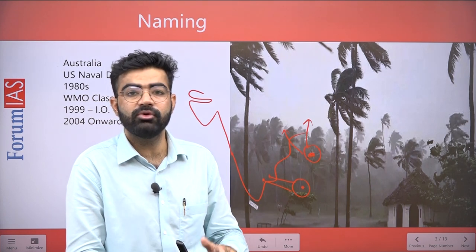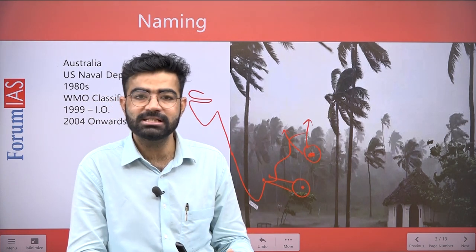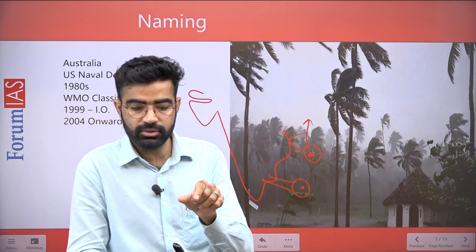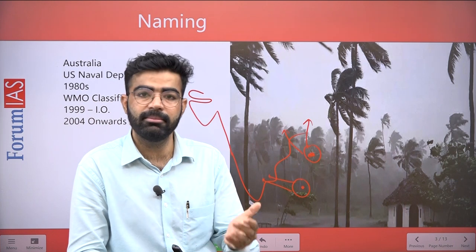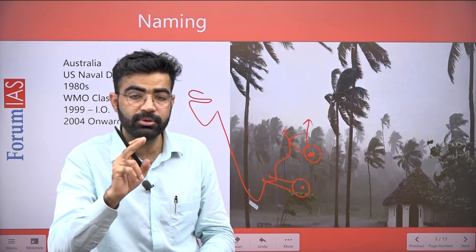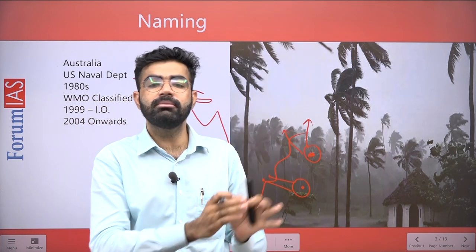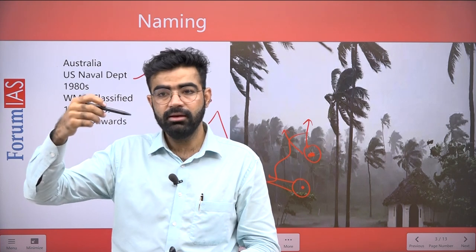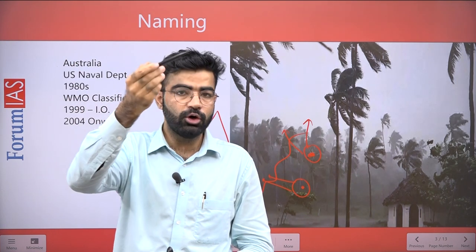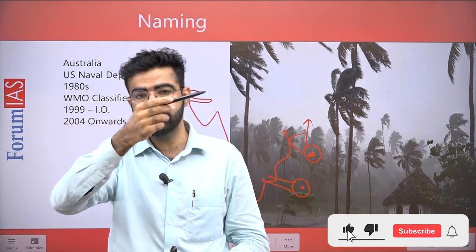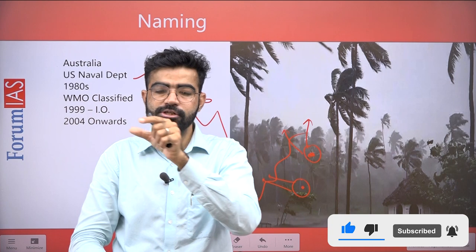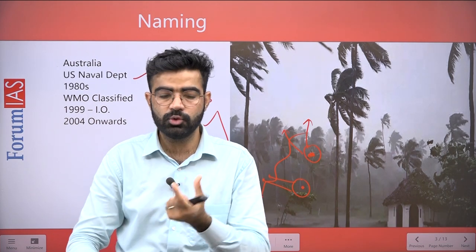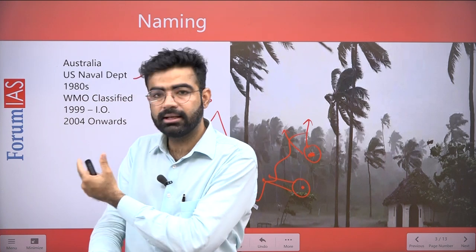But in the 1980s, a feminist movement started and objections were raised about why these events should only have female names. This led to male names or gender-neutral names being used. Because of that feminist movement, gender-neutral naming started. Especially, the World Meteorological Organization, which divided the oceans into parts — Pacific, North Pacific, South Pacific, Atlantic, North Atlantic, South Atlantic, Indian Ocean, North Indian Ocean, Southern Indian Ocean — according to those divisions and under WMO guidance, naming conventions were established.